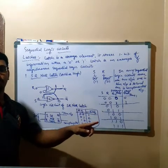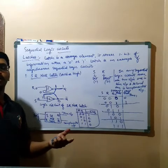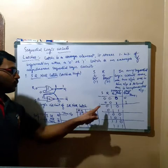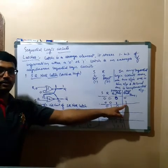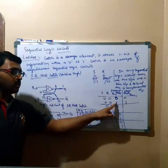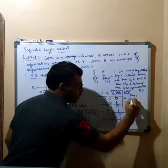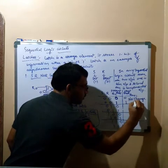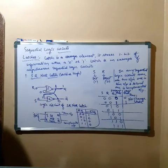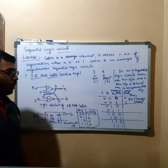The meaning is: if you have already stored some value in the latch — either 0 or 1 — and you want to retain that value, you apply S=0, R=0. Because the next state you get is the same as the past output. Whatever the past output is, you get the same value as the next state — no change.